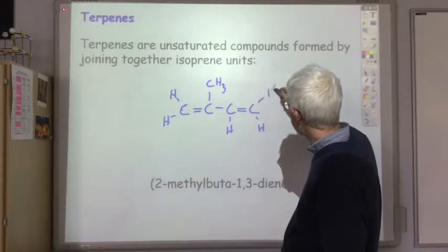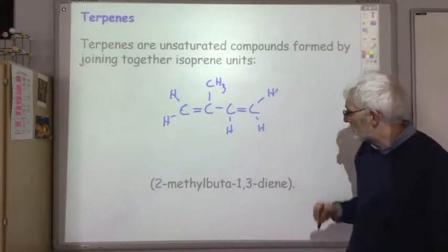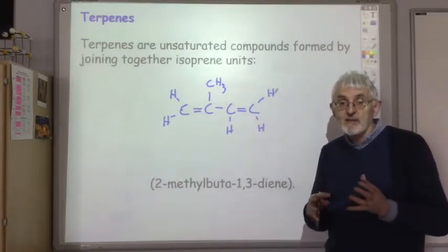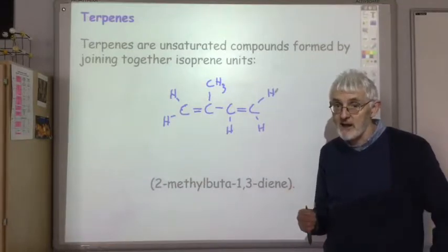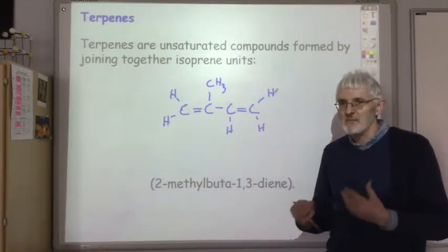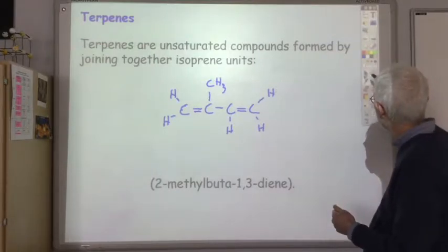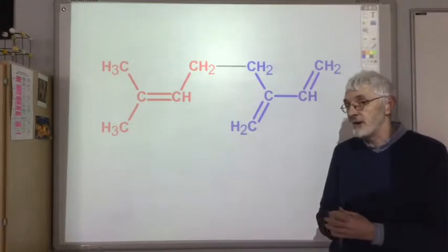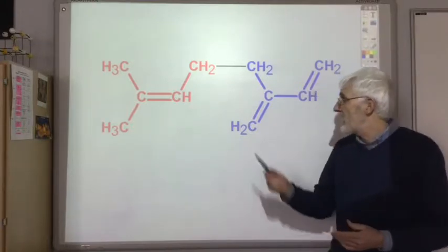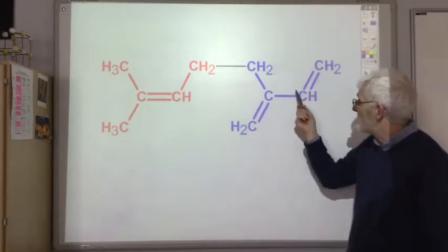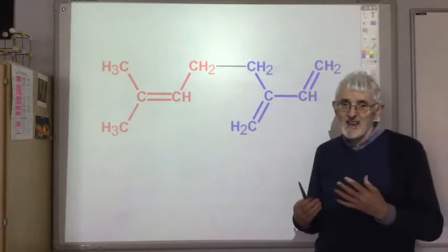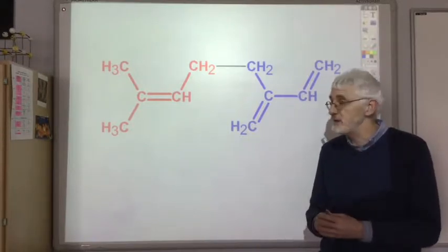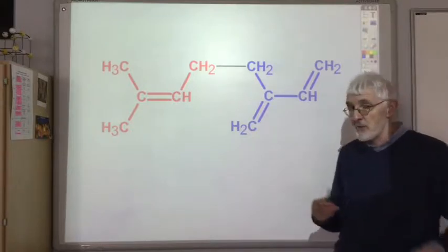Make sure you're able to draw that. These isoprene units can be joined together in lots of different ways to make a wide variety of terpenes, although we'll only look at some fairly simple terpenes. Here's a terpene formed by joining together two isoprene units. I've colored one isoprene unit red and one blue. Notice that you've lost some of the double bonds. Don't expect to see the same double bond pattern in the terpenes as in the isoprene unit.